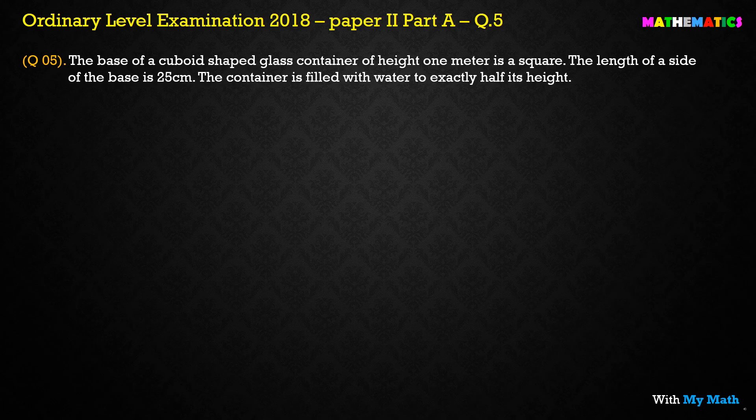The base of a cuboid-shaped glass container of height 1 meter is a square. The length of a side of the base is 25. The container is filled with water to exactly half of its height. The first question asks us to find the volume of water in the container in cubic centimeters, so we need to take care about the unit of measurement.